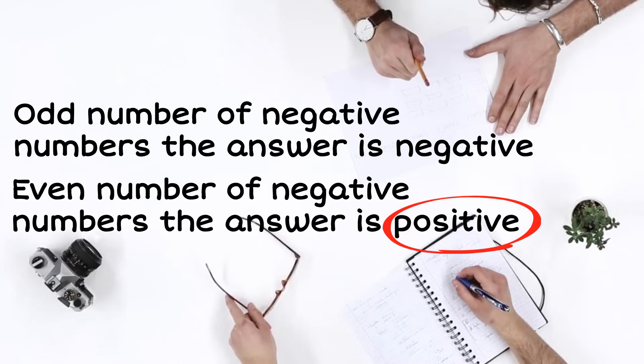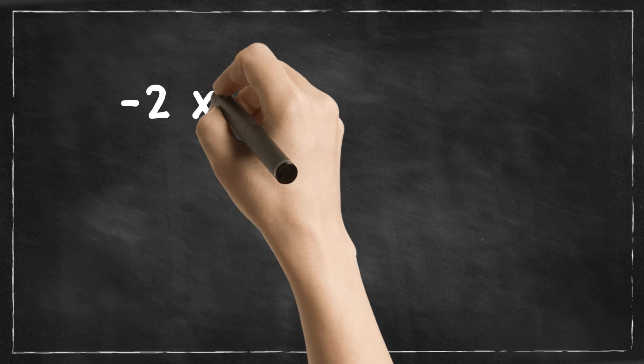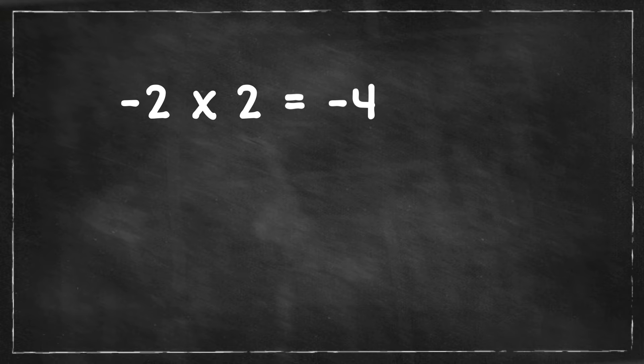Let's go back to our original questions. Negative 2 times 2 is 4. You have an odd number of negative numbers, so it is negative 4.